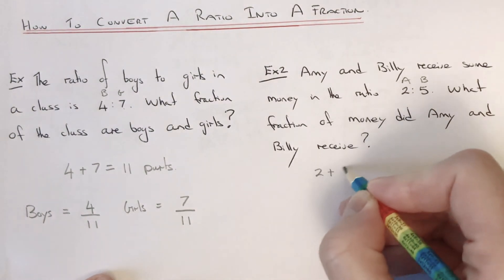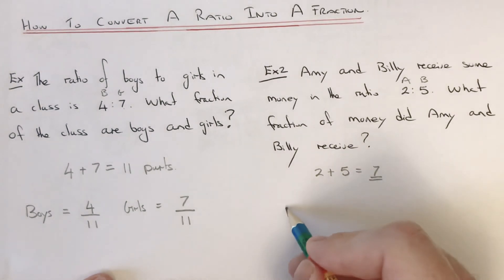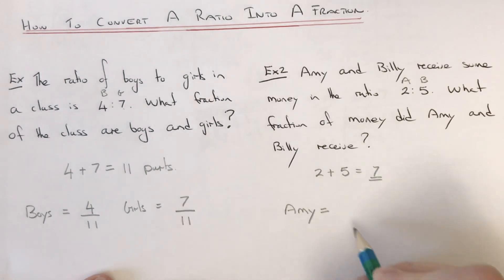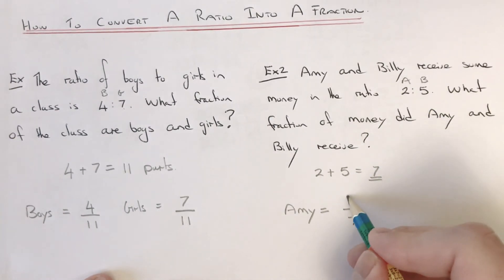Let's do Amy's share first of all. We're going to put 7 on the denominator, and we get 2 parts, so we put the 2 on the numerator. Amy's fraction is 2/7.